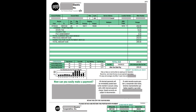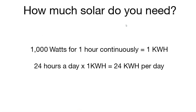If you're not familiar with the term kilowatt hours as opposed to kilowatts, essentially a kilowatt hour is watts times how many hours. For example, if your mining rig used 1,000 watts for one hour continuously, that would be one kilowatt hour. There are 24 hours in a day, which would give you 24 kilowatt hours per day.